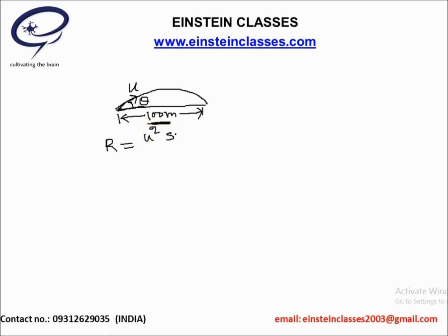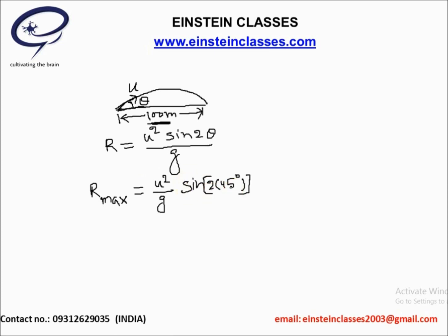The range formula is R = u² sin2θ / g. The range is maximum when theta equals 45 degrees, so sin(2×45°) = sin90° = 1. Therefore, the maximum range equals u²/g, and according to the given problem, this is equal to 100 meters.